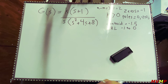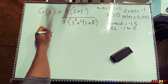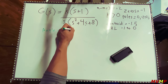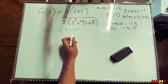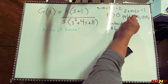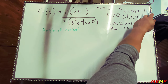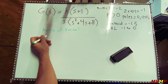The next thing we solve for is angle of arrival. For an angle of arrival there needs to be complex zeros in the loop gain. Since our only zero is at negative one, which is not a complex zero, there will be no angle of arrival.